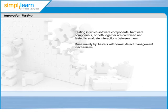This is mainly done by testers with formal defect management mechanisms. At each stage of integration, the testers concentrate solely on the integration itself. For example, if they are integrating component A and B, they are interested in testing the communication between A and B, and not the functionality of the individual modules, as that would already have been done in component testing.